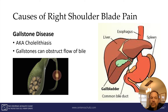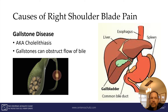Another cause of right shoulder blade pain is gallbladder disease. As you can see here, the gallbladder sits right underneath the liver and has many different functions — one of which includes bile salts, which are excreted from the gallbladder and help us digest food, including fats. You can get gallstones in the gallbladder, giving rise to an obstruction and causing significant pain that oftentimes presents in the right shoulder blade area.